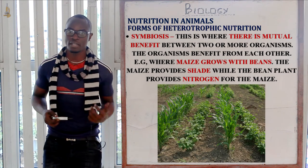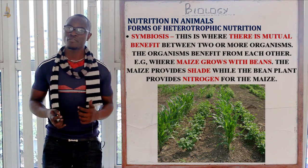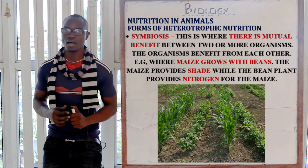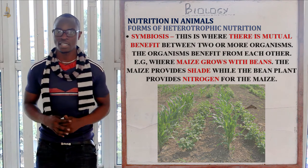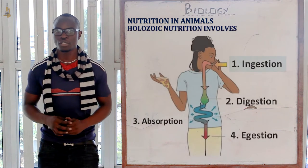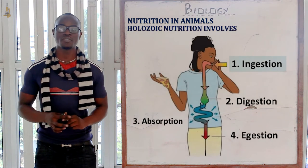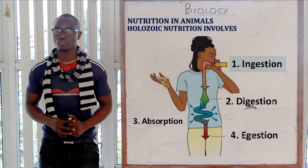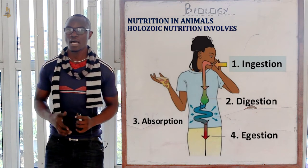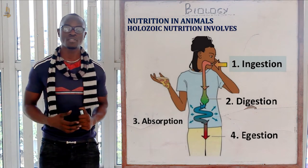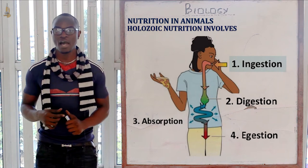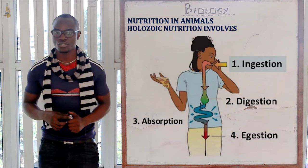An example of a symbiosis relationship is maize and beans, which are mainly planted alongside each other. Holozoic nutrition mainly involves ingestion of food, digestion of the food, absorption of the food, assimilation of the food — which means utilizing the food in your body — and finally egestion.